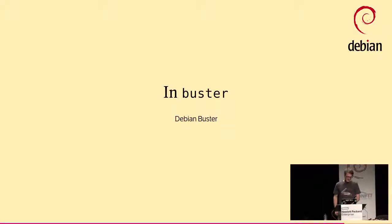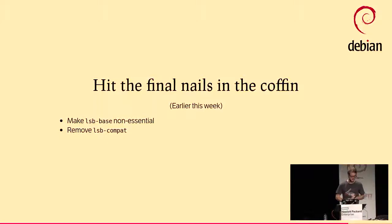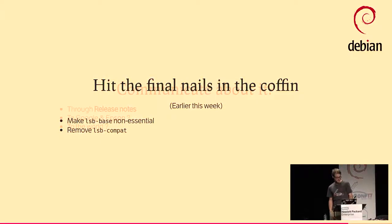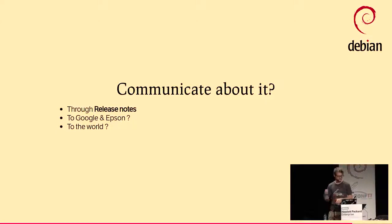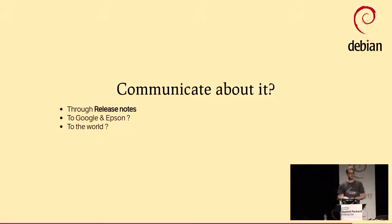The question is also what happens next. So in Buster, the idea is to put the final nails in the coffin for LSB. I've just made LSB base non-essential, so if you need it, just depend on it and it will be installed, but it's not installed by default. And I've just removed LSB compat. Maybe I should communicate slightly more about it rather than just removing packages and having a changelog entry. There's the idea of having communication in the release notes. Maybe we should also talk to Google and Epson saying your package is not going to work on the next stable release, so please fix your things. Maybe we should make sure LWN notices and does an article.